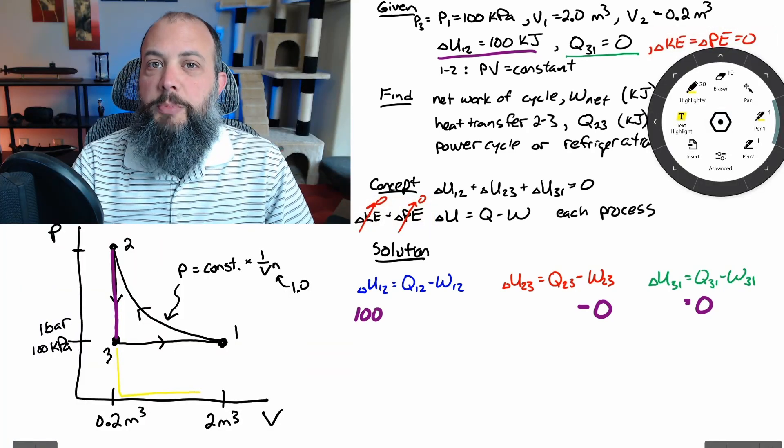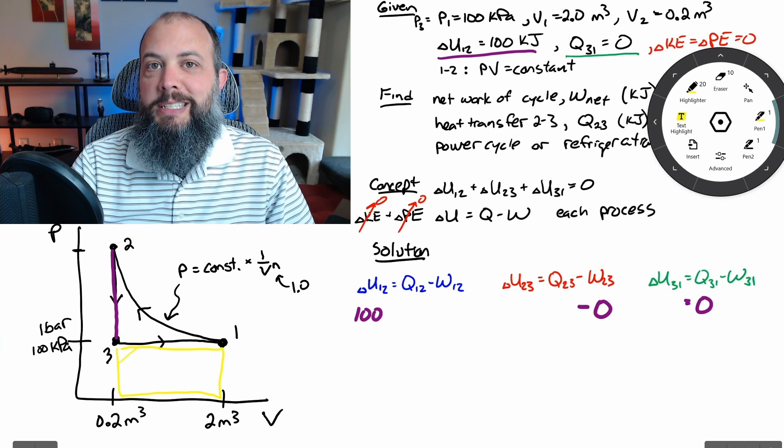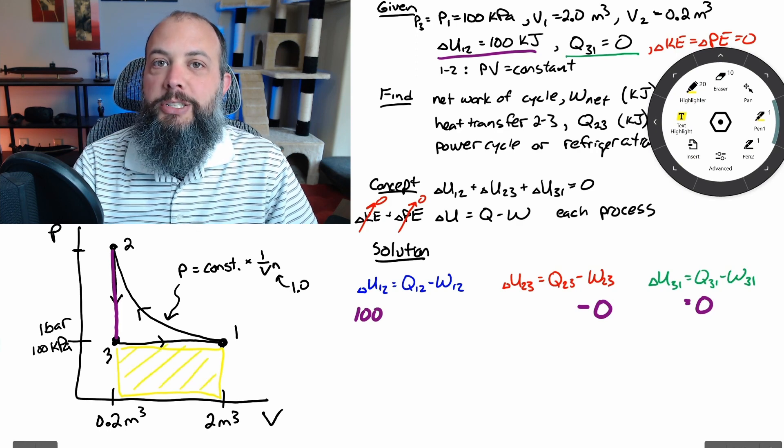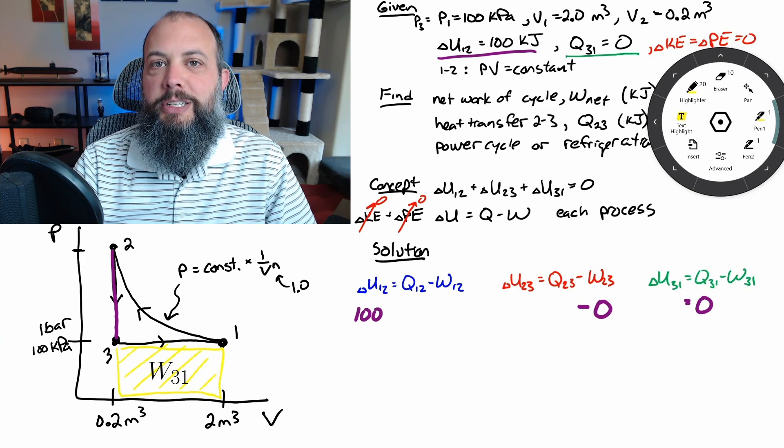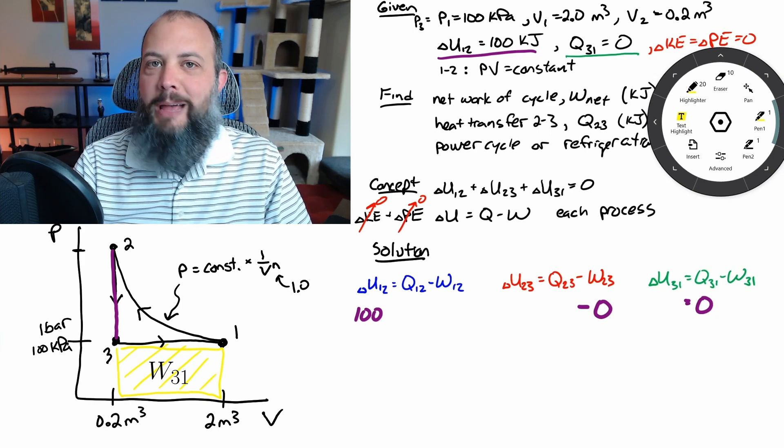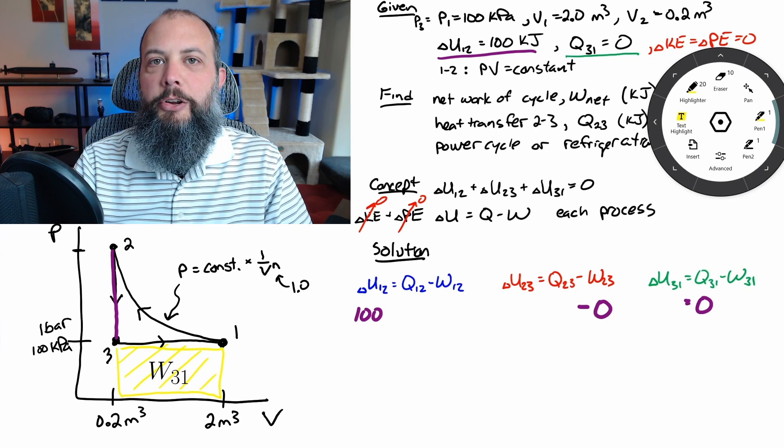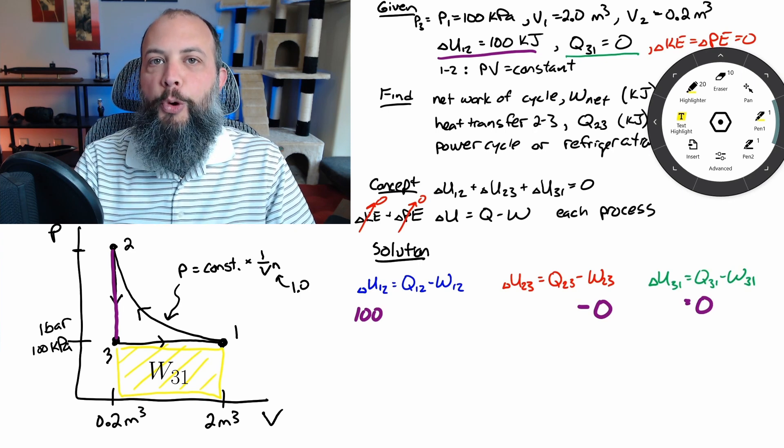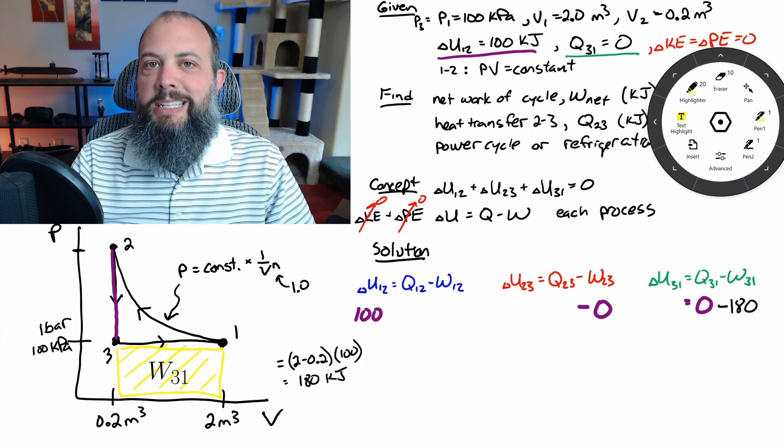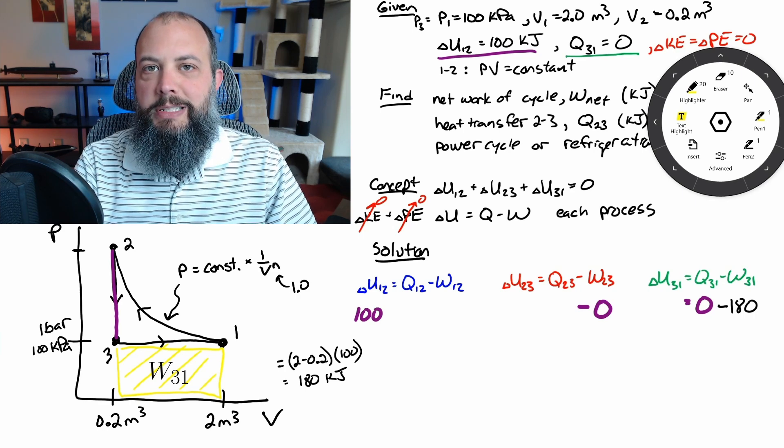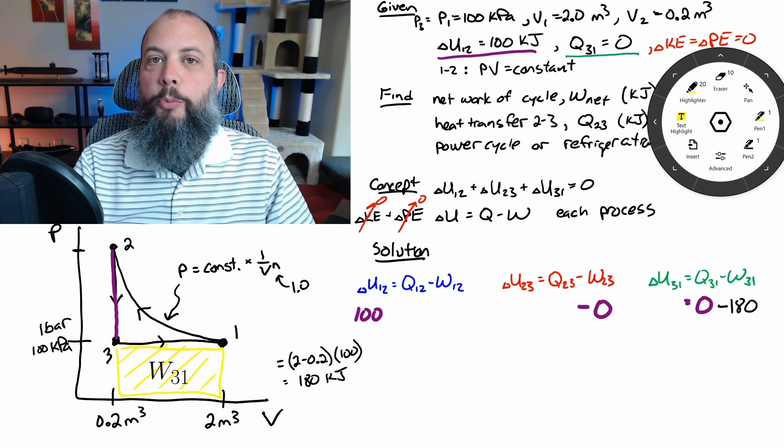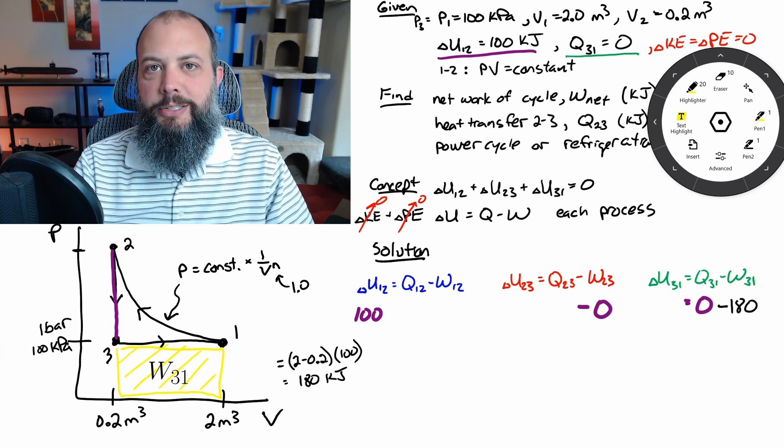Next easiest term is going to be to find the area of this yellow rectangle which is going to be work from process three to one. This is going to be positive work because the system is expanding when the gas is expanding that means it is lifting up the cylinder in the piston which means it's doing work to the environment and because of that sign convention where positive heat is energy entering the system and positive work is energy leaving the system that's why the conservation of energy equation has Q minus W on the right hand side.